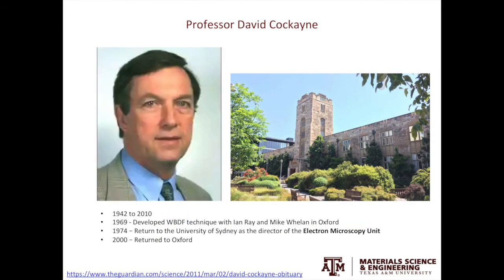Before wrapping up today's video, I want to quickly introduce the scientist who developed the weak beam dark field technique, Professor David Cockayne. Professor Cockayne did his undergrad at the University of Melbourne, then pursued his PhD at the University of Oxford. The story I heard is that in 1969, while having afternoon tea, he had a discussion with his colleagues. Back then, people doing dislocation imaging only used the two-beam condition. Professor Cockayne asked: instead of exciting one G, what if we excite a higher order G but still use one G to form the image? And this led to the development of the weak beam dark field technique.